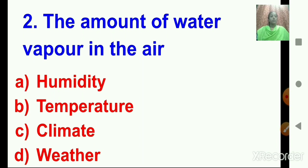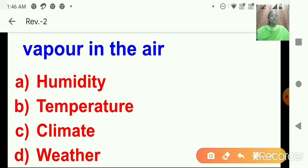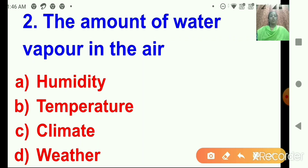Number 2: The amount of water vapor in the air — what is it called? Let's read the options. A: Humidity. B: Temperature. C: Climate. D: Weather. The amount of water vapor in the air is called A, that is Humidity. So I will click on A.